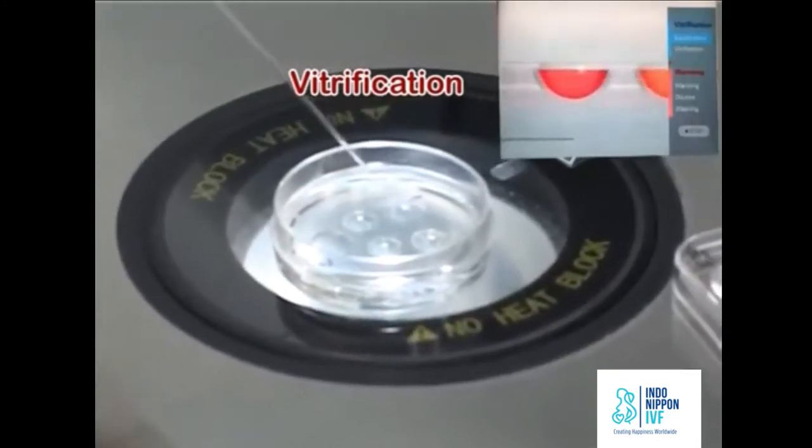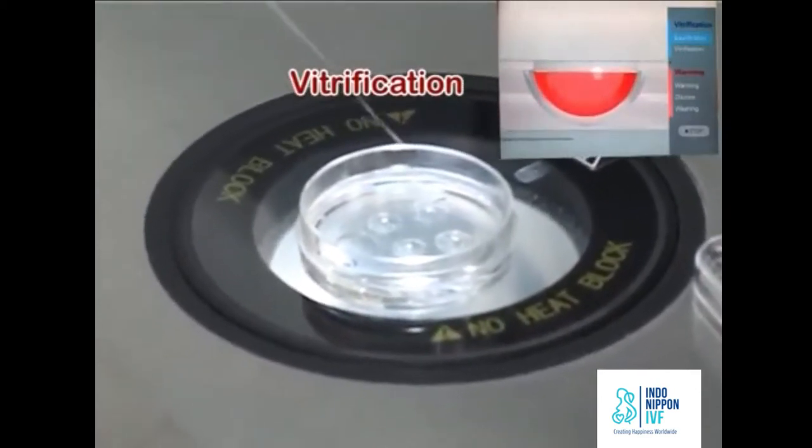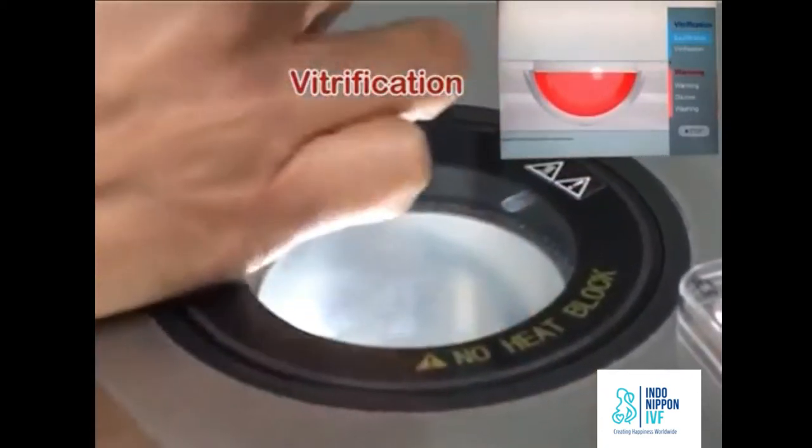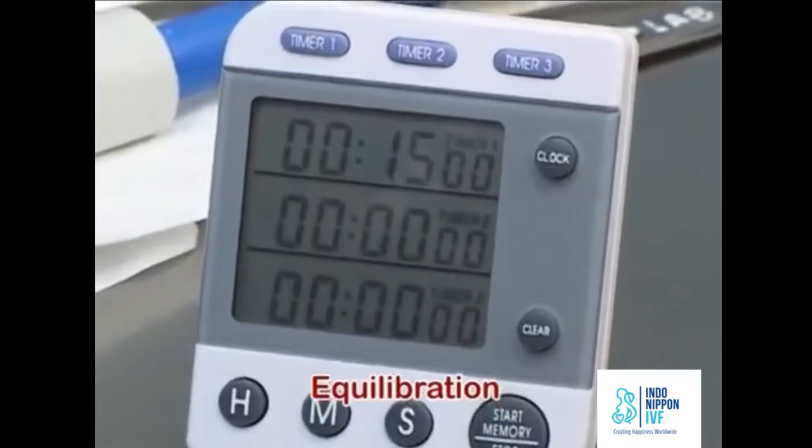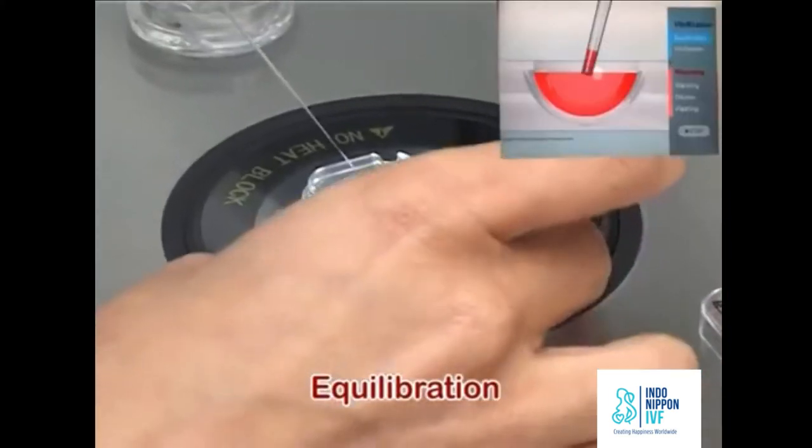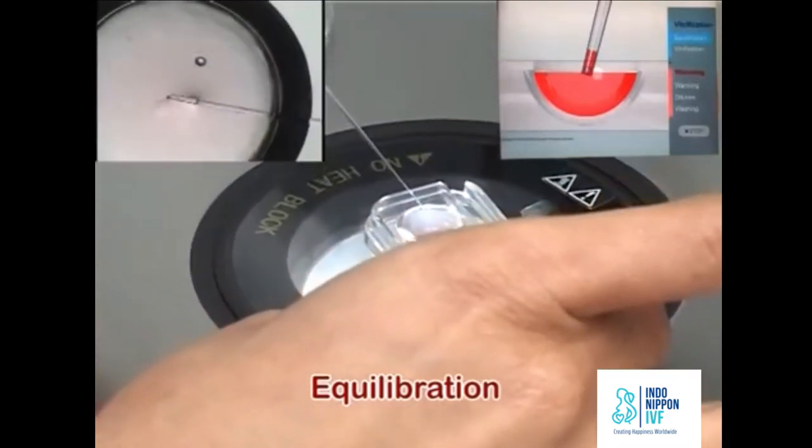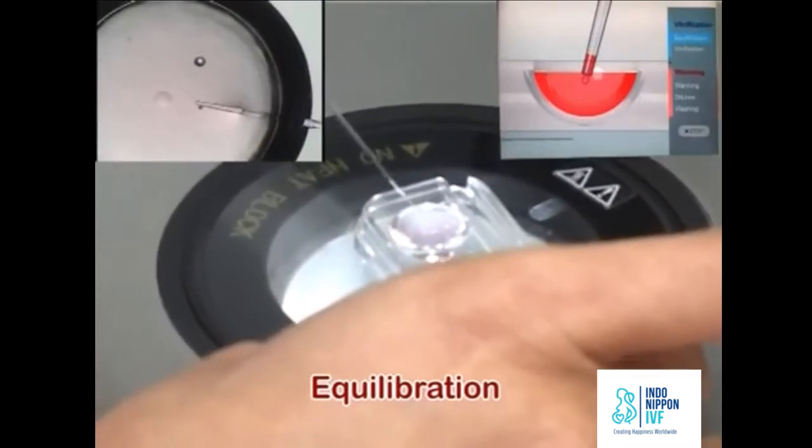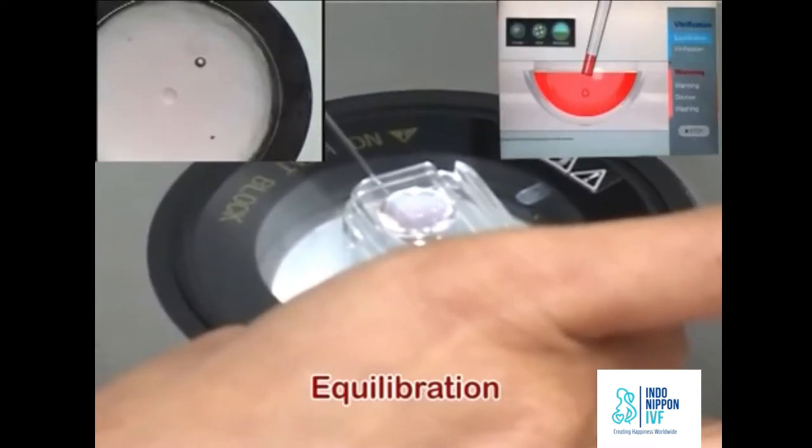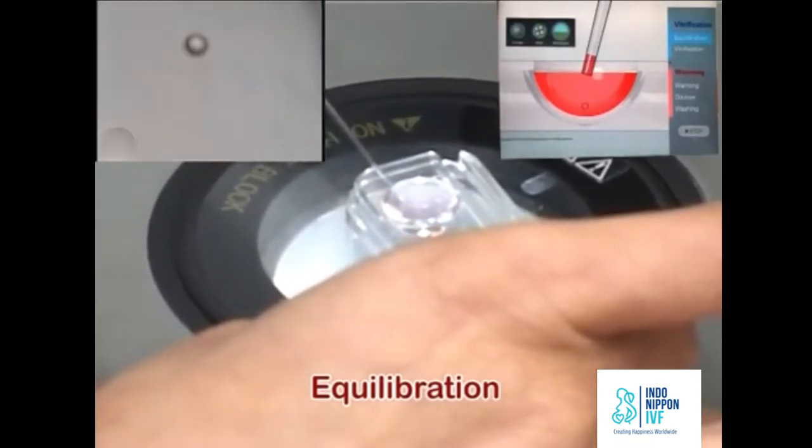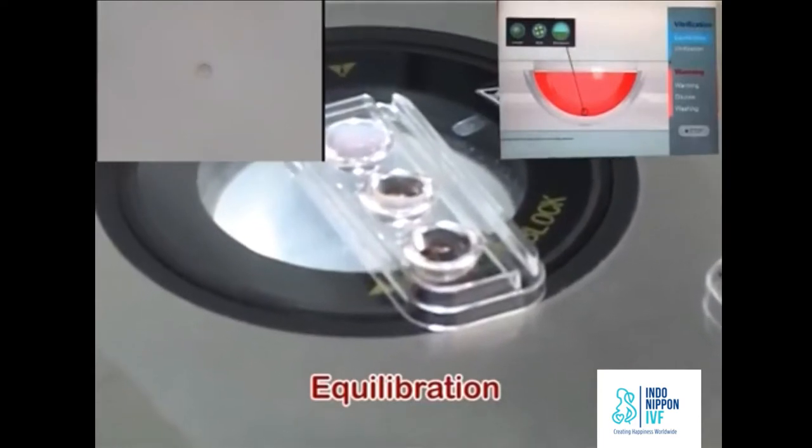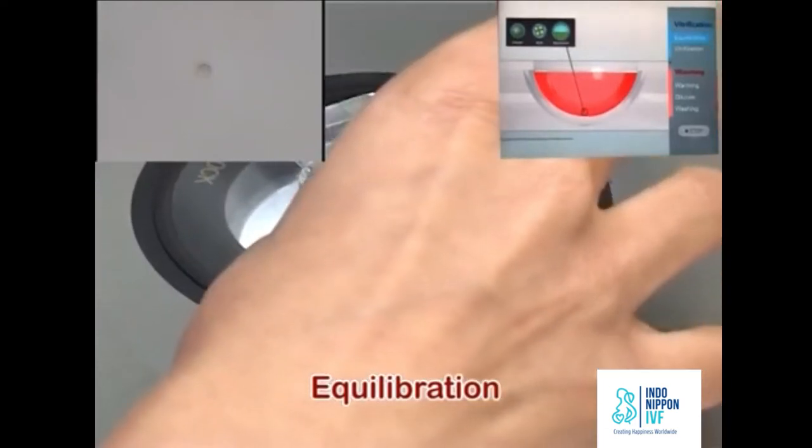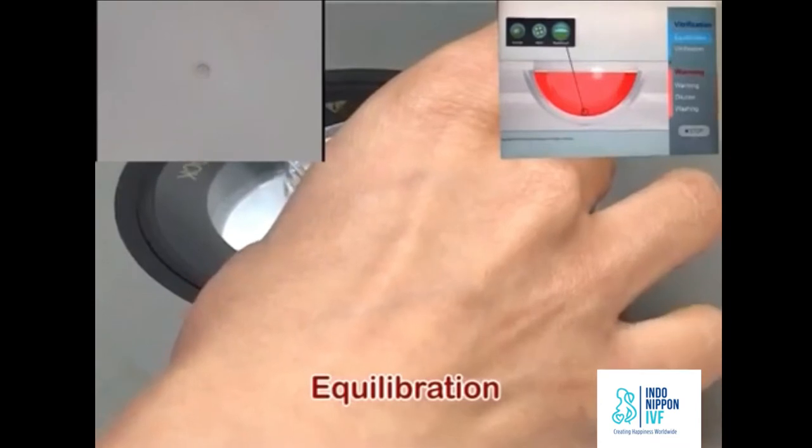Aspirate the oocyte at the tip of the pipette. Transfer the oocyte with minimal amount of medium on the surface of ES. Start the stopwatch. As the oocyte sinks to the bottom, it will shrink. Put the lid back on the plate and wait for the recovery of the shrinkage.